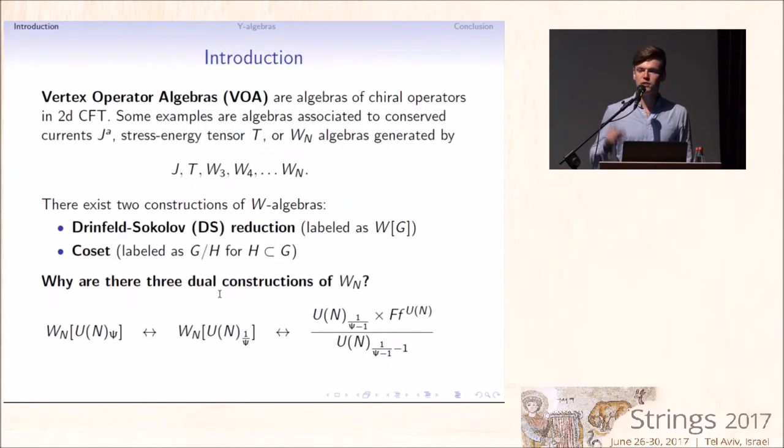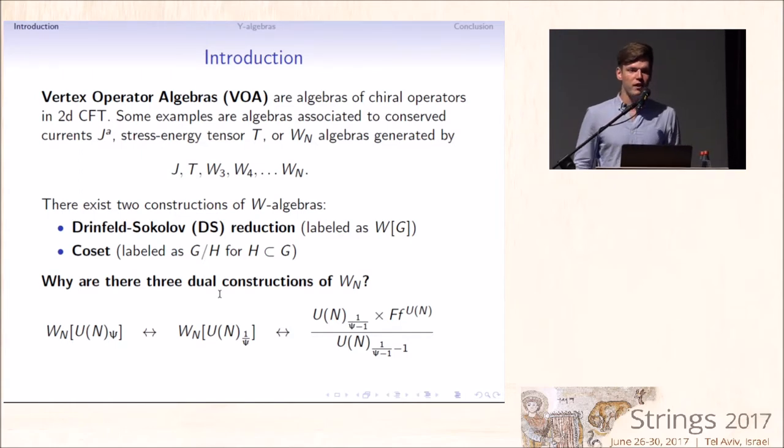Vertex operator algebras are algebras of chiral operators in two-dimensional CFT. Some familiar examples are Kac-Moody algebra associated to conserved currents or Virasoro algebra associated with stress-energy tensor, or W_N algebras that are extensions of stress-energy tensor algebra by fields with spin 1, 2, 3, 4, and so on up to N.